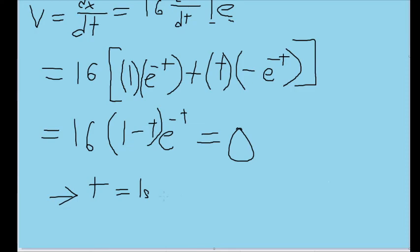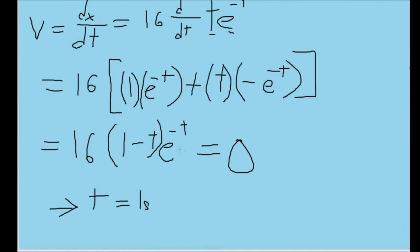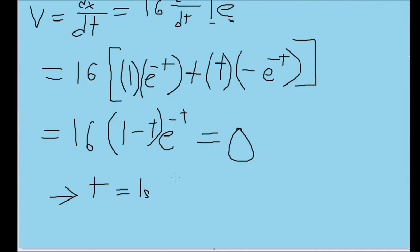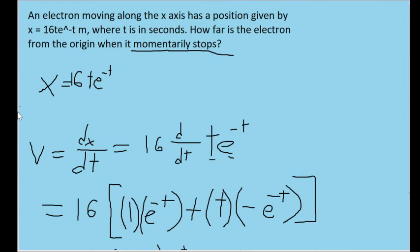So when t is equal to one second, our velocity, our speed of the electron, has briefly stopped. So now that we know this, we can plug this time into our formula for the electron's position to find out where exactly it is at that point in time.